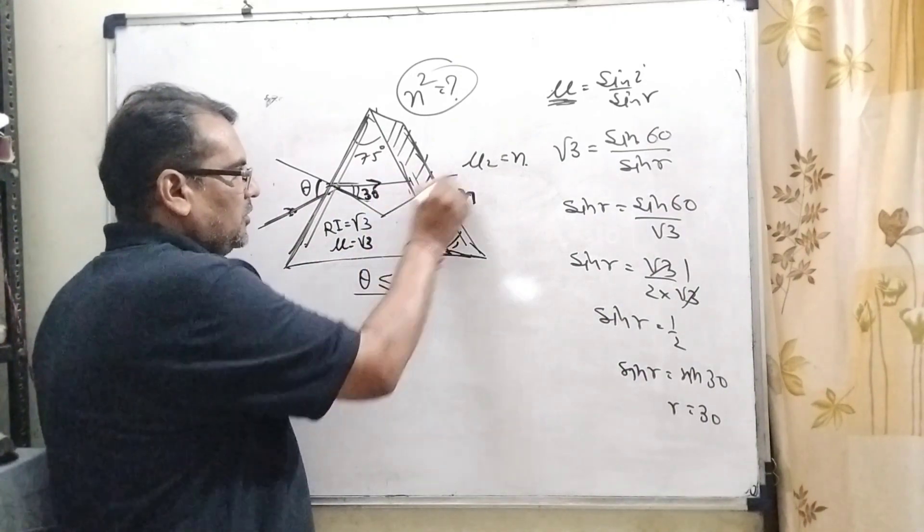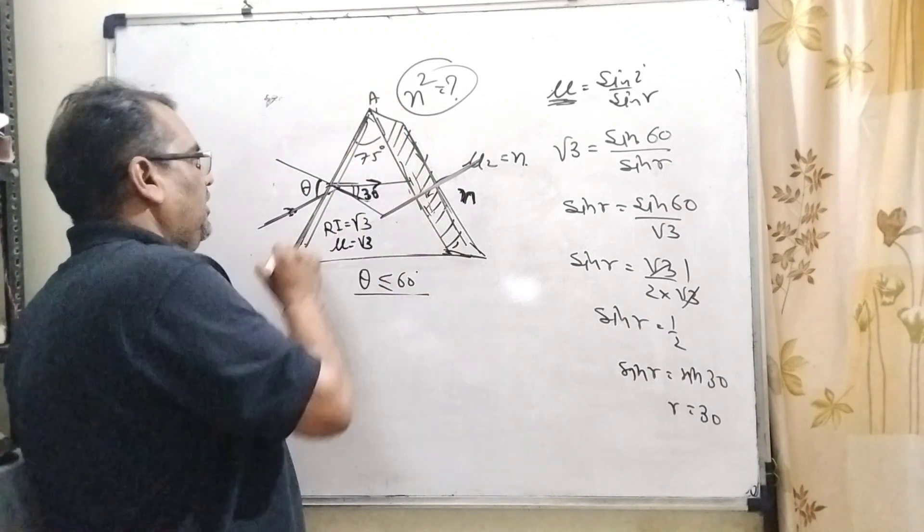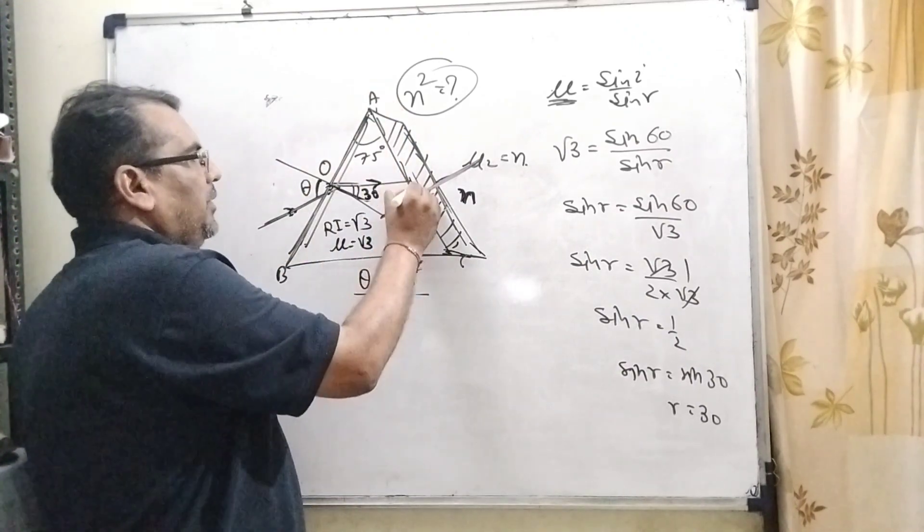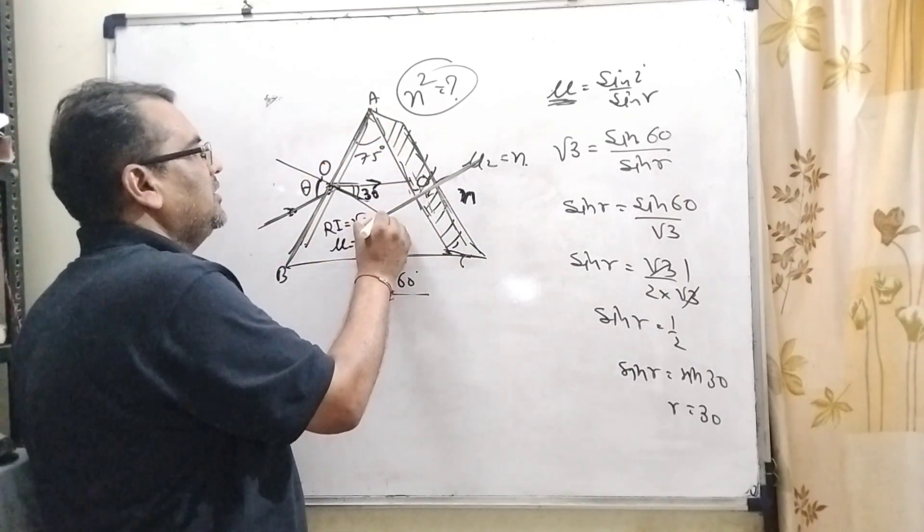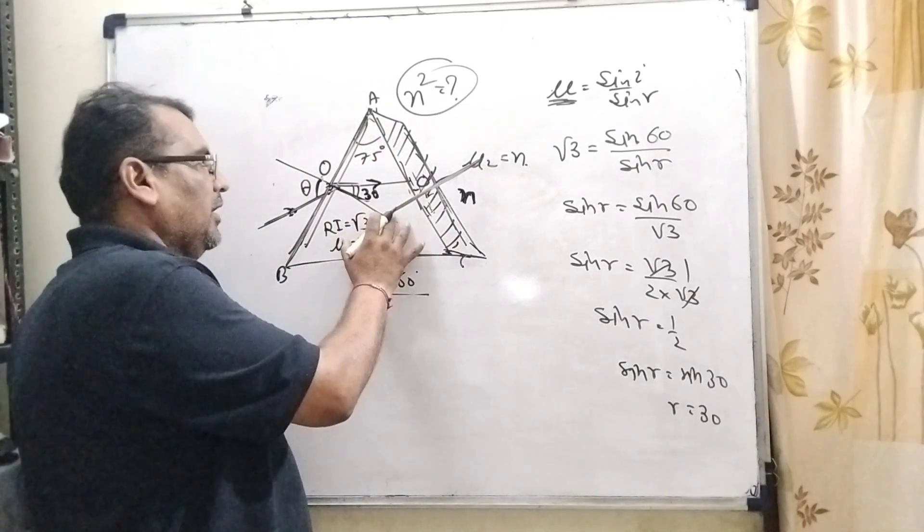Now we have to draw this normal. As we know this angle ABC, here A, let us consider O. Here O dash. And let us consider this point is P. AO, P and O dash, that is a cyclic quadrilateral.